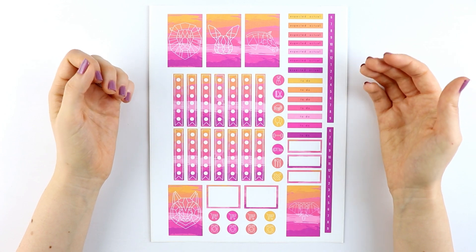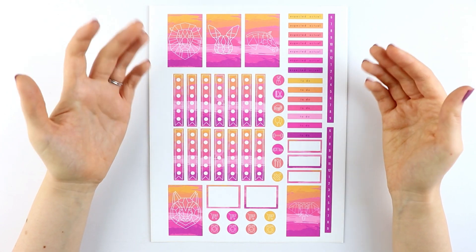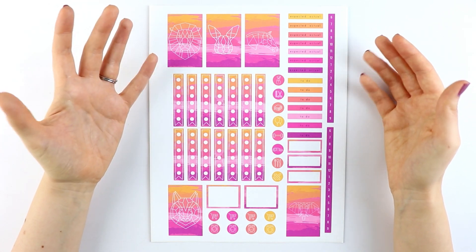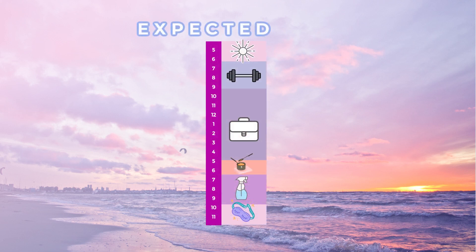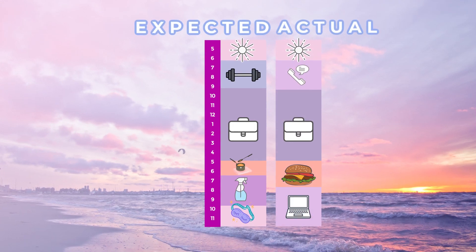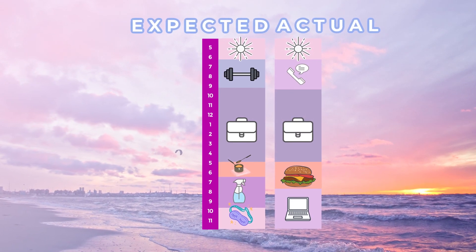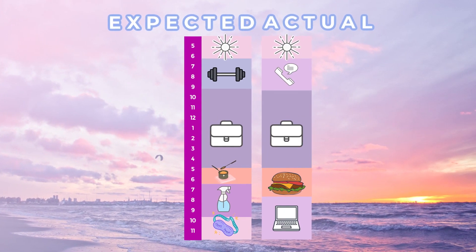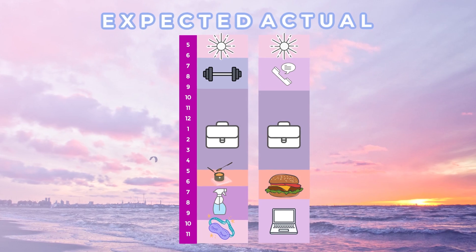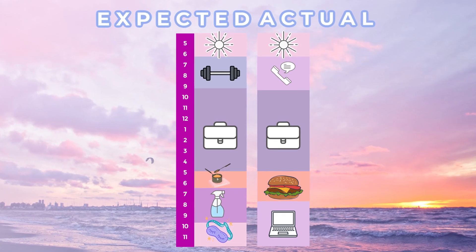Tracking your time also gives you accountability throughout your day. So if you are writing in your planner what you're doing and it's not matching up with the expected column, you know that something is off — that tells you that you need to change what you're doing.